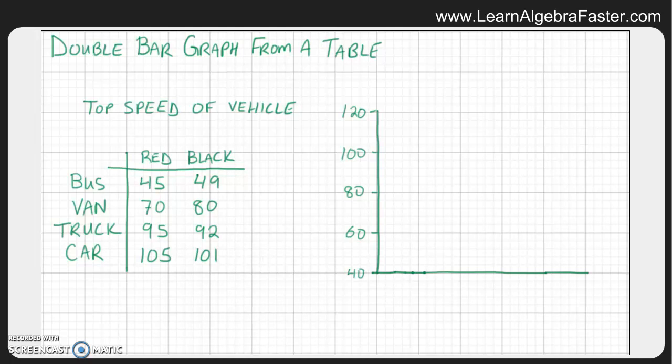So let's look at the data that we have here in this table. It's called the top speed of a vehicle, and you see that we have different types of vehicles and we have different colors of vehicles. Now in real life, probably the color of the vehicle won't actually change how fast it would go, but for this video I just want to show how to take this data from the table and we can actually put it over here on the bar graph and create a double bar graph from this.